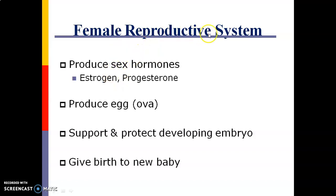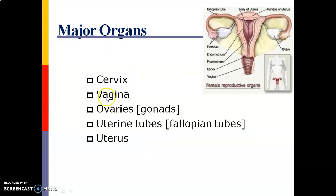The female reproductive system produces sex hormones like estrogen and progesterone, also produces eggs (ova), and supports and protects the developing embryo to give birth to a new baby. The major organs are the cervix, vagina, ovaries, fallopian tubes, and uterus. These are the major components of our female reproductive system.